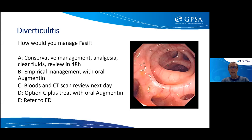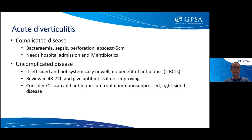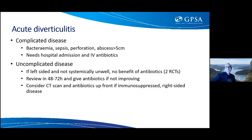Poll results: about two thirds would manage conservatively and avoid antibiotics, reviewing in a couple of days. Your registrar may be hesitant — they've seen these patients in ED and know they can be really unwell. About 25% would give antibiotics, and some would investigate. Josh, what is the latest evidence around managing acute diverticulitis, and how do we classify these patients in primary care?